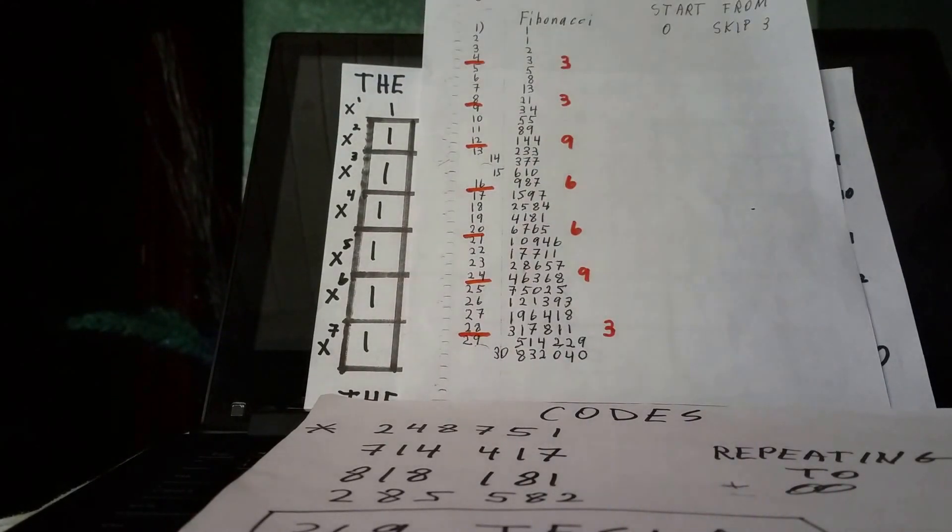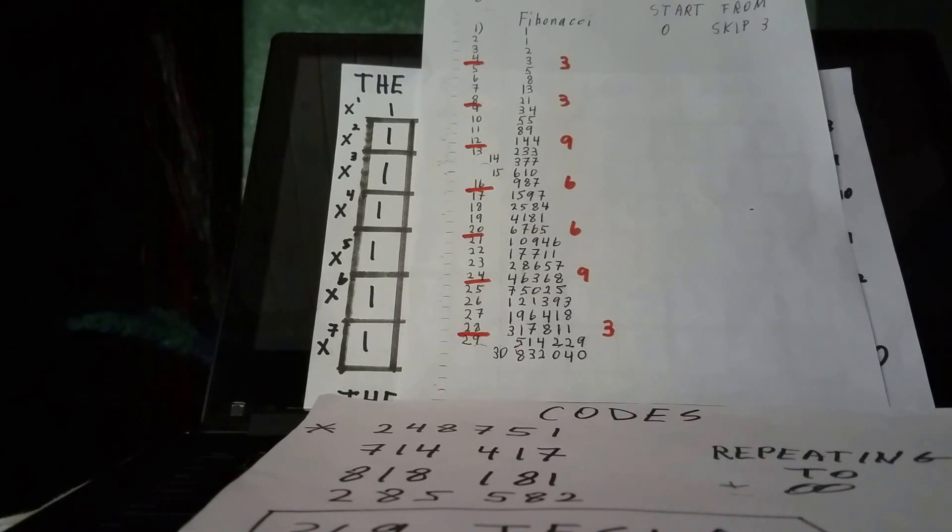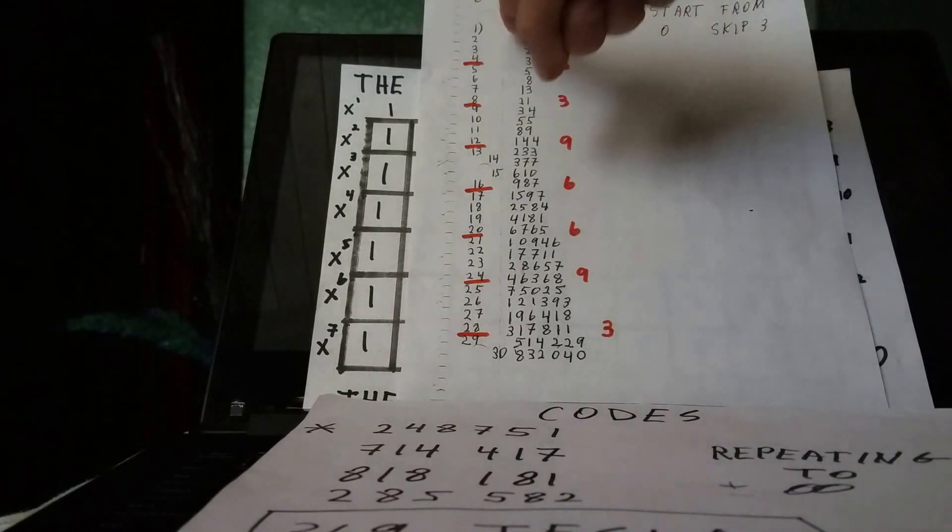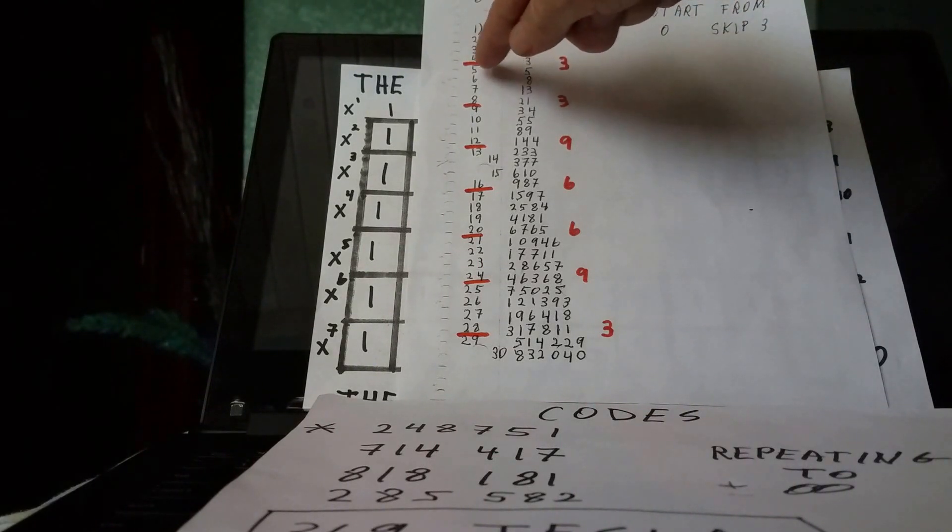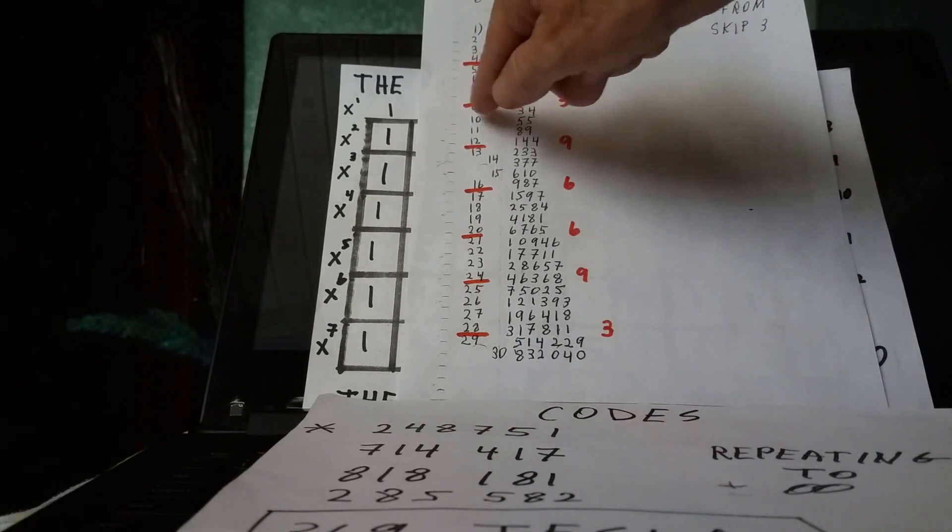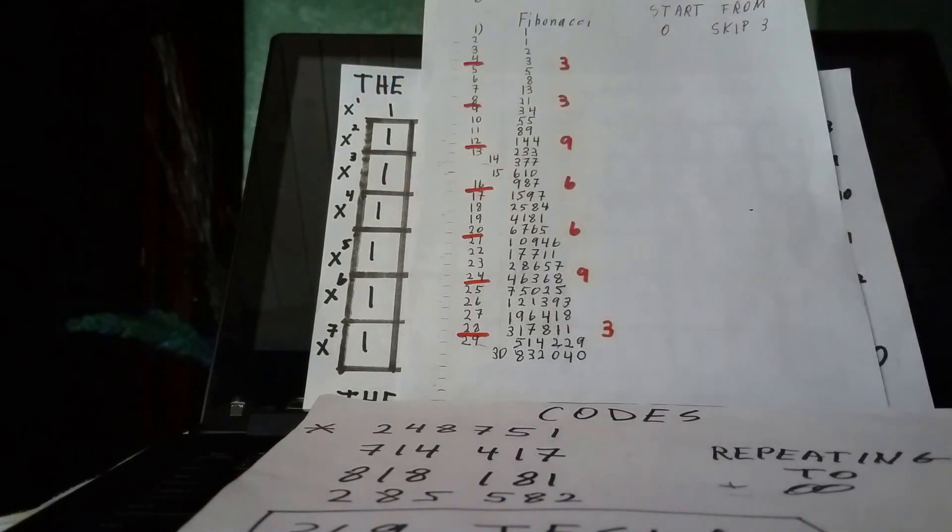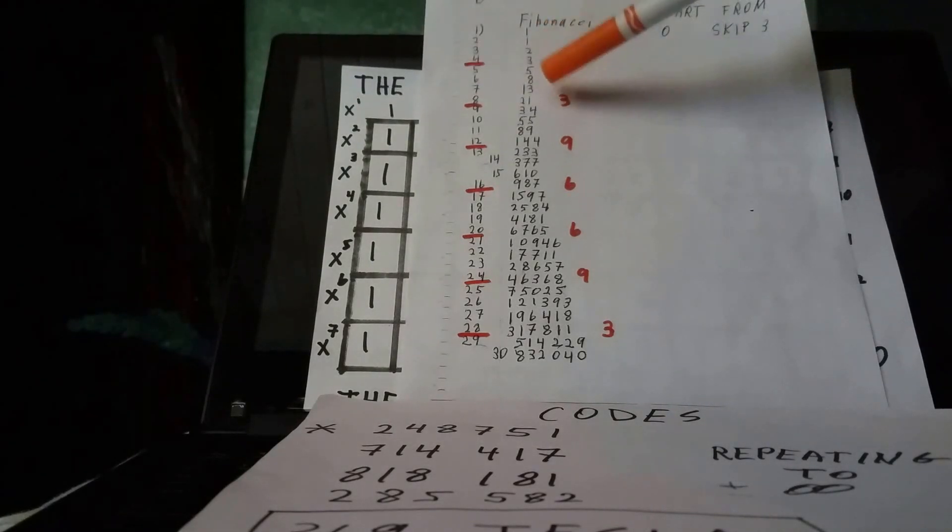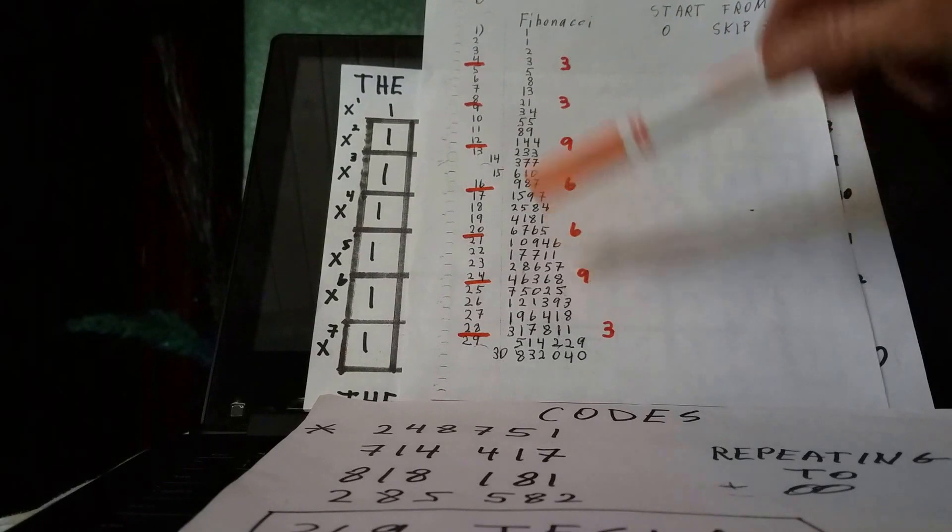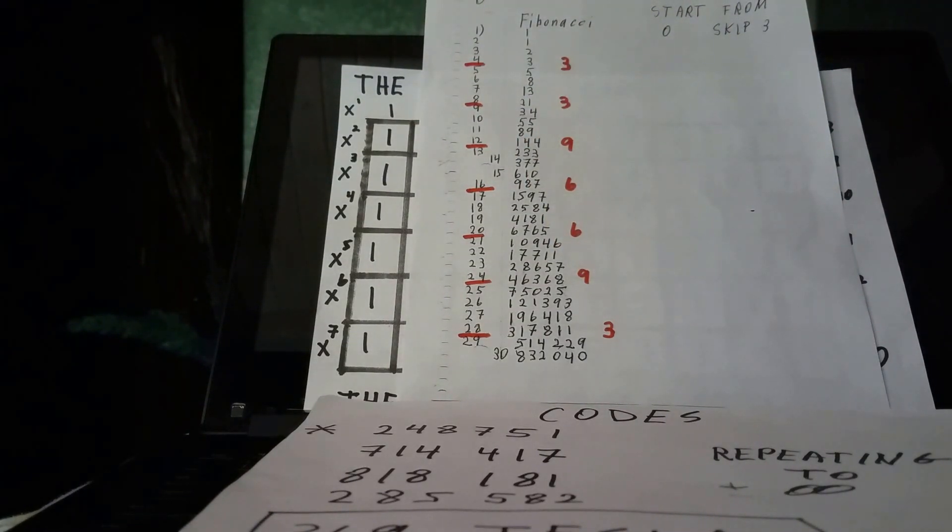But we'll start with the Fibonacci code, and we will observe that if we start from 0 and skip 3, and then by intervals of 1, 2, 3, bang, 1, 2, 3, bang, 1, 2, 3, bang, and on and on and on forever, we will come up with the code 339669. Okay? So, that goes on into infinity, as with the Fibonacci code.